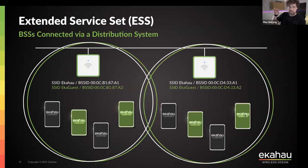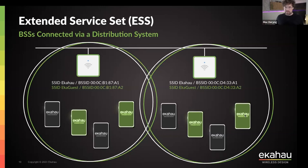When we have multiple access points that are interconnected somehow via a distribution system, we call it the Extended Service Set — ESS. It's not just one AP and clients; it's multiple APs, multiple clients, multiple SSIDs, multiple BSSIDs per access point, all connected together so we can roam between them. That's the ESS.